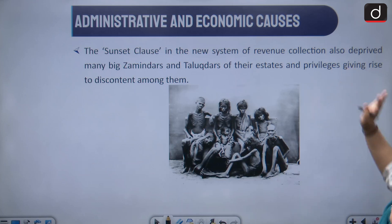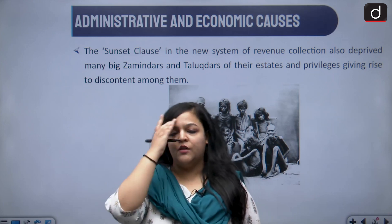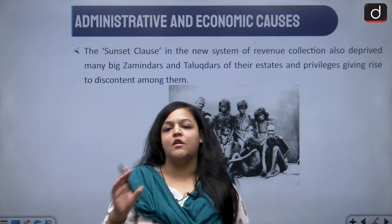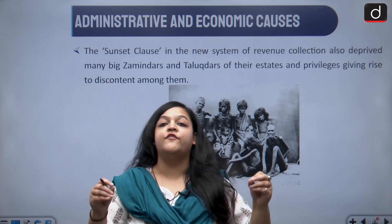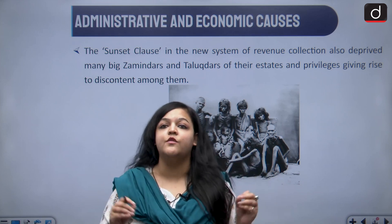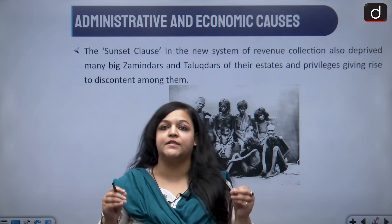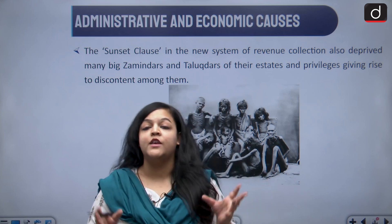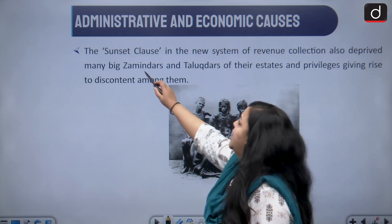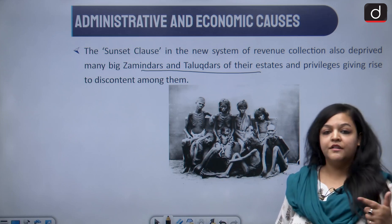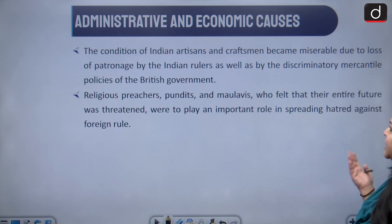There was also something called the sunset clause, associated with the Permanent Settlement, which stated that if revenue was not submitted by the due date, the zamindari would be auctioned off. So if revenue was due on the 26th and not submitted by end of day, the zamindari would be auctioned. This severely restricted the powers of zamindars and taluqdars, and many started losing their estates because of it.